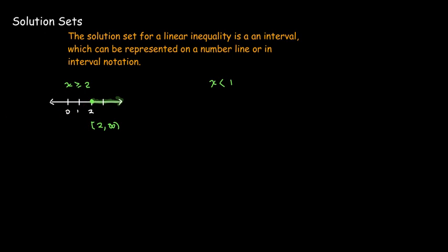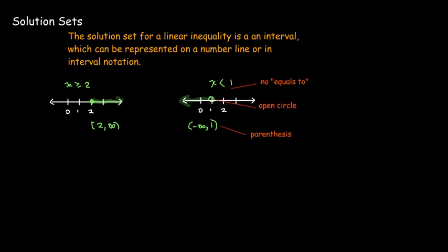Another inequality could be x is less than 1. This time there's no 'equals to' part, so we start at 1 and go to the left, in the negative direction. Since there's no 'equals to' part, 1 is not part of the solution set, so we use an open circle. In interval notation, going off to the left forever is represented by negative infinity, and we use a parenthesis around the 1 to indicate it is not part of the solution.